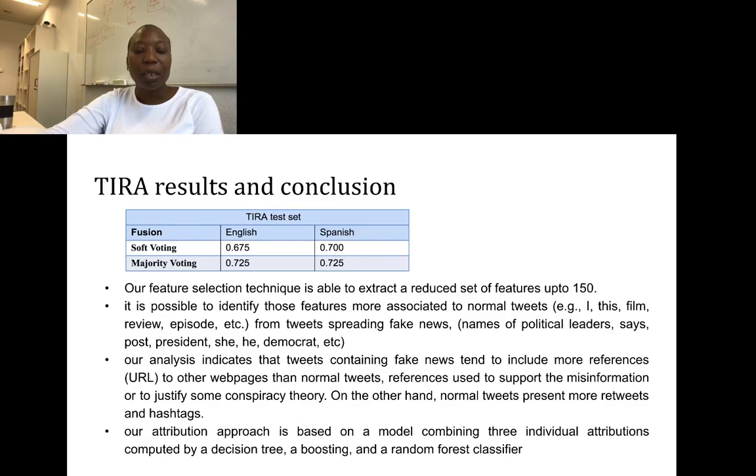With these 150 features, we are able to identify features that are closely associated with the different categories of data. Our attribution approach was based on a combination of three individual classifiers: the decision tree, random forest, and boosting. Thank you.